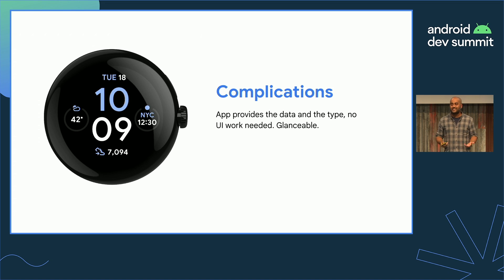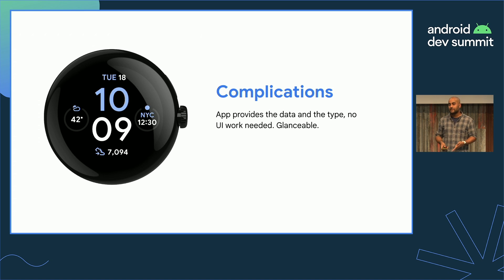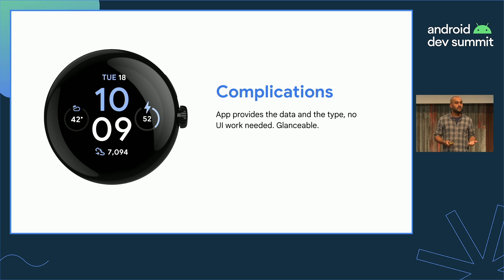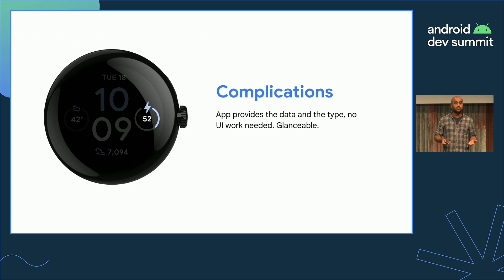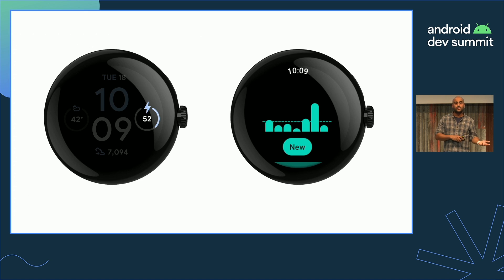A complication is any feature that's displayed on a watch in addition to the time. Here on the watch face, we've got four of them: the date at the top, the time in New York on the right, the user step count, and the weather. One of the use cases for the generic fitness app is to show the user's progress throughout the week, and complications work really well for this — we just have to provide the data. The watch face renders the UI, so the user can see how much they've achieved of their goal, and tapping it opens the app for more detail.